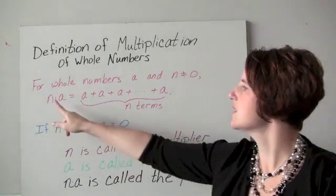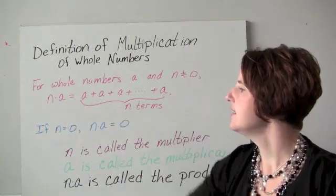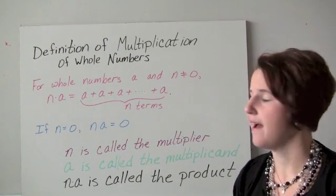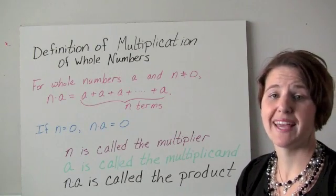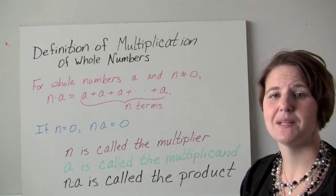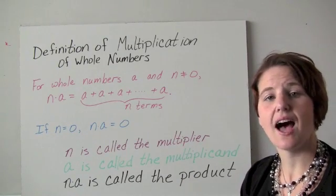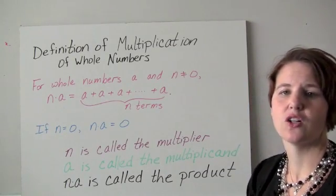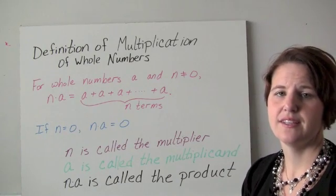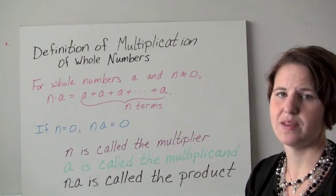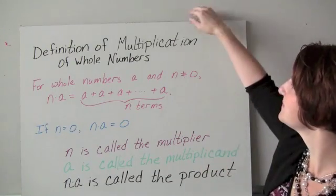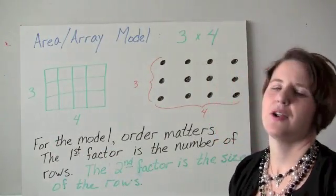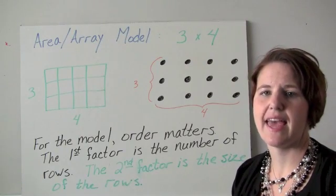Written in this order, n times a: n is called the multiplier, telling us how many groups we have. A is called the multiplicand, which tells us the size of each group. And n times a is called the product — the product of the multiplier with the multiplicand.